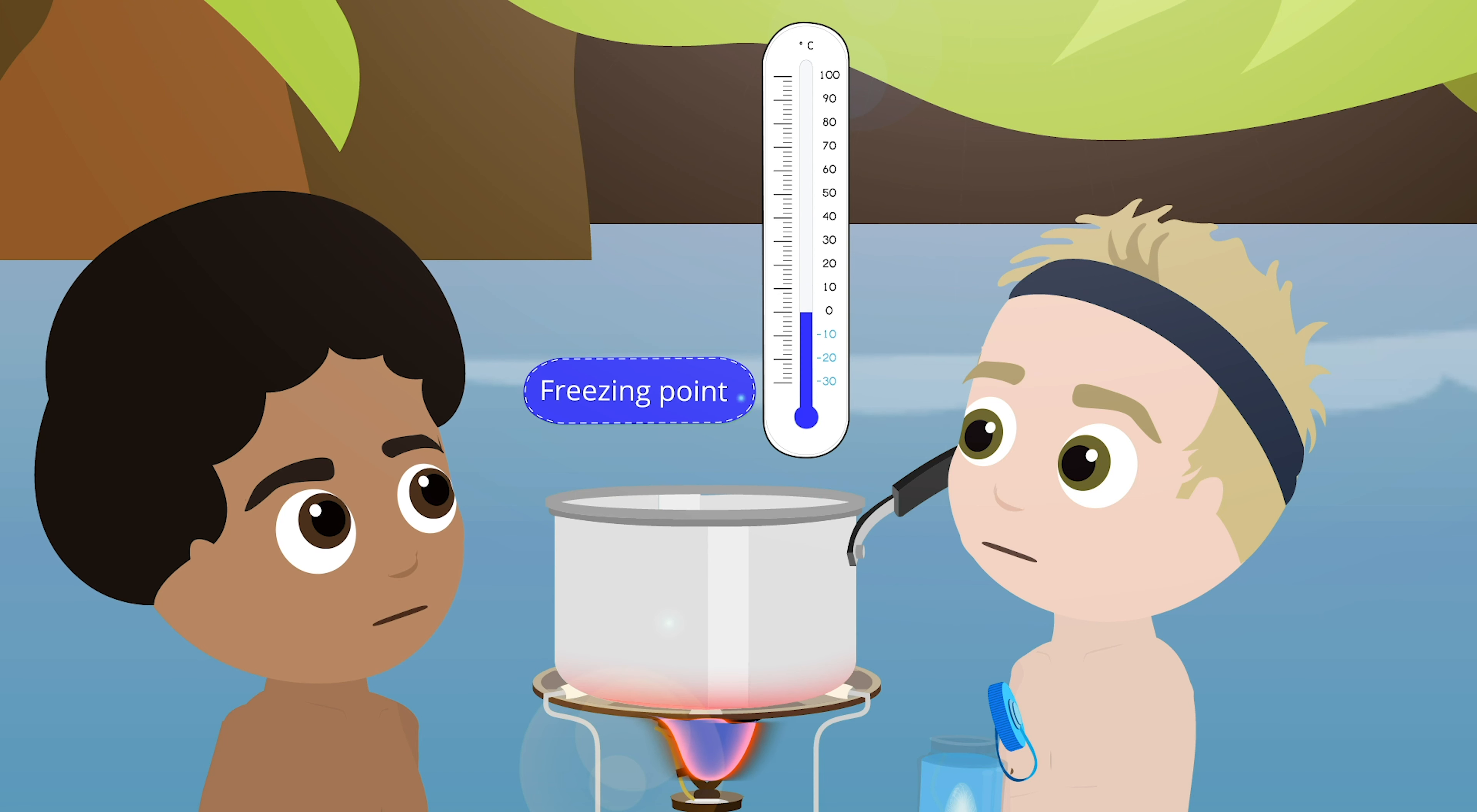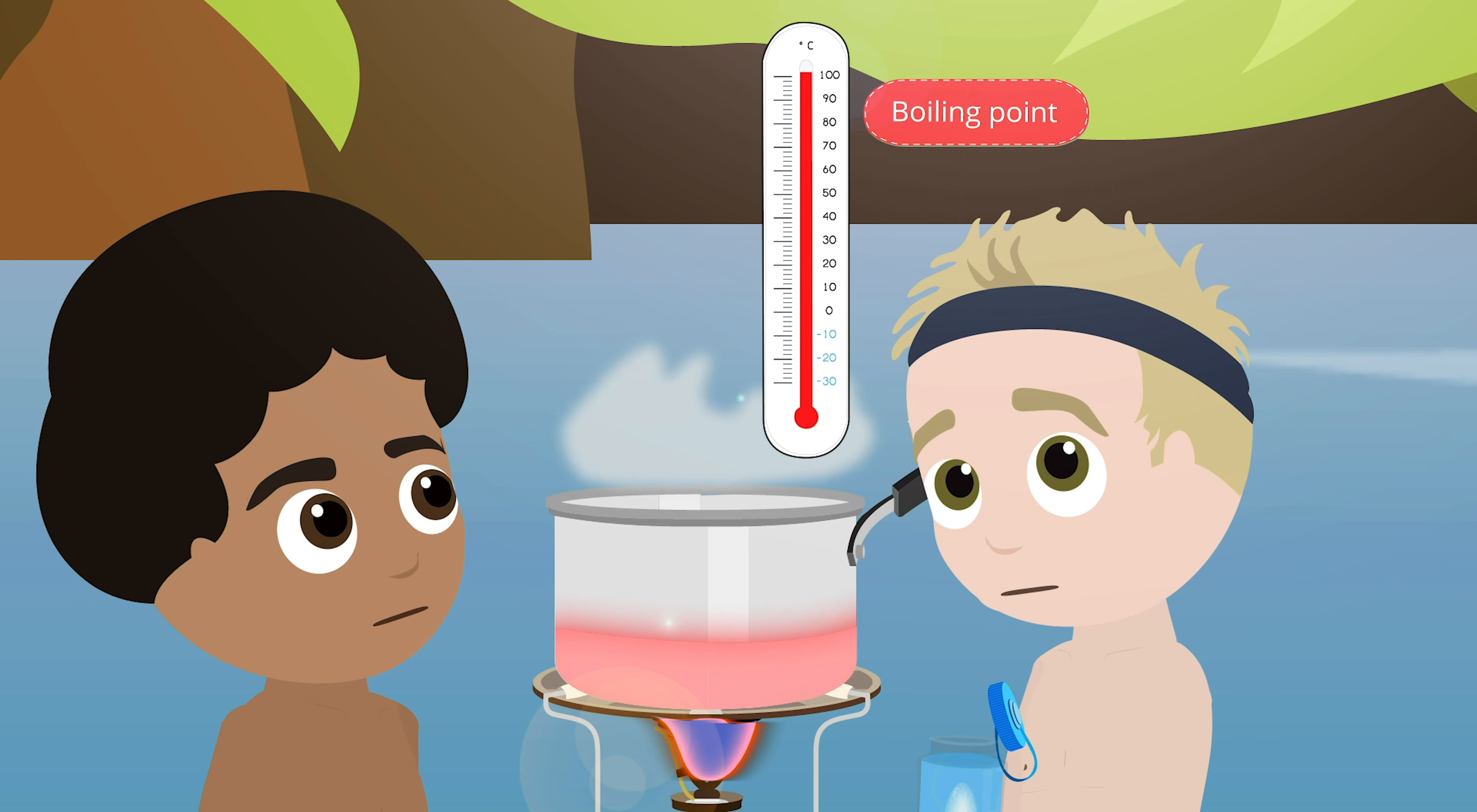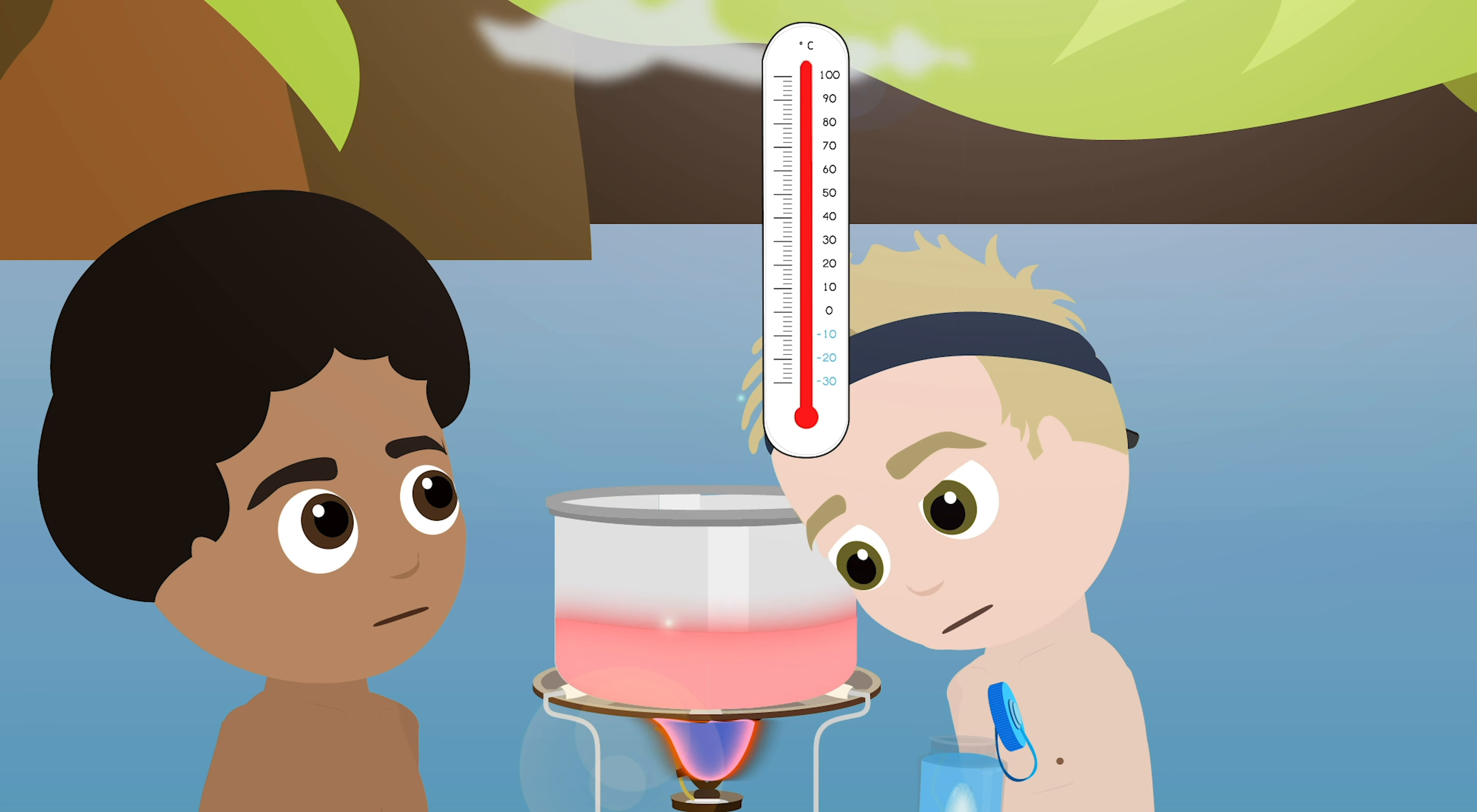A thermometer, if it's measuring temperature in Celsius degrees, is based on water's states of matter. When water freezes, the temperature is zero degrees Celsius, and when water is boiling, the temperature is 100 degrees Celsius.